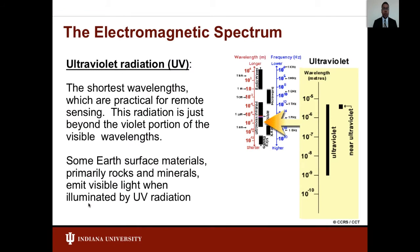For most purposes, the ultraviolet or UV portion of the spectrum has the shortest wavelengths practical for remote sensing. This radiation is just beyond the violet portion of the visible wavelengths, hence its name. Some earth surface materials, primarily rocks and minerals, emit visible light when illuminated by ultraviolet radiation.